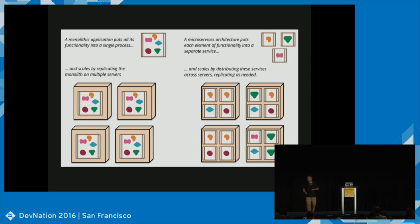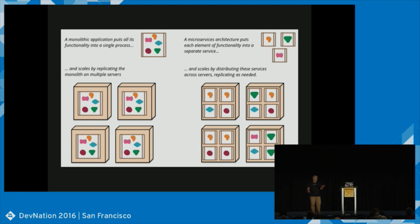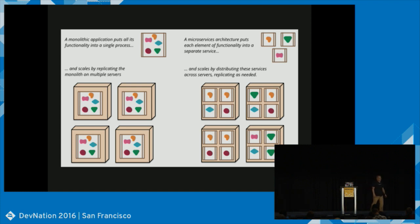The key part with microservices is each service is owned by a cross-functional team — usually the two-pizza-sized teams. Does everybody know the two pizza rule? It comes out of AWS; the size of their teams is whatever you can feed with two pizzas. That's an appropriately sized team. This usually includes a front-end designer, middleware person, database person, and ideally a sysadmin as part of that process.